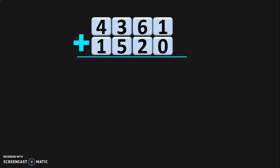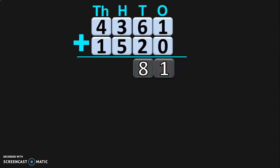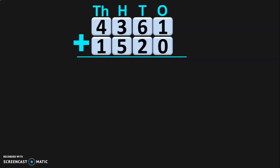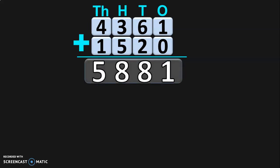Let us do another sum to understand the relation between addition and subtraction. Again we are going to add two 4-digit numbers. The sum of the two 4-digit numbers is 5881.